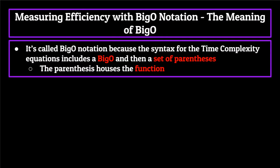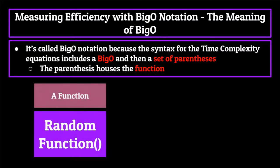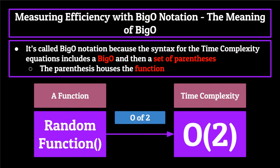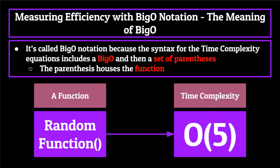The reason it's called big O notation is because the syntax for these equations includes a big O and then a set of parentheses. Inside these parentheses will be some function which correctly returns the number of operations needed to be run by the computer. For example, let's say we have a fake function — for this fake function, let's say its time complexity equation was O(2). We would pronounce this as 'O of two', meaning it takes two operations before our function can finish. If the time complexity equation was O(5) instead, it would be 'O of five', and so on.